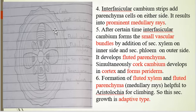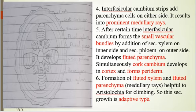The formation of flattened xylem and pitted parenchyma is helpful to Aristolochia. These two main features — flattened xylem and flattened parenchyma, that is medullary rays — are helpful to Aristolochia for climbing other plants.